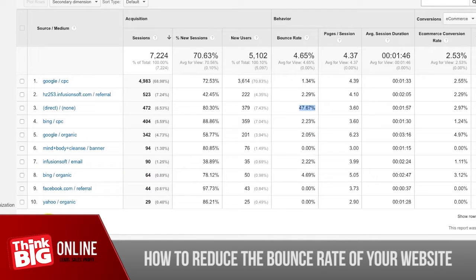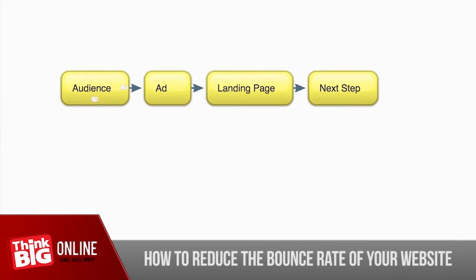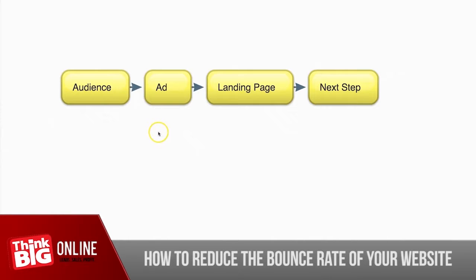The next point in reducing your bounce rate is making sure your audience, your ad, your landing page, and the next step are all congruent. Think of it like unlocking a combination lock — you need to get each number in place in the right order for the lock to open. If your audience doesn't see an ad compelling for them, they won't click. Once they land on the landing page, they need to see something congruent with the ad and the audience for them to take action.